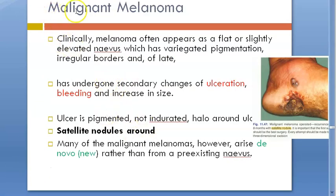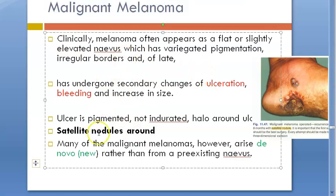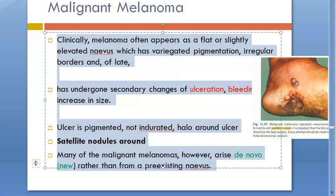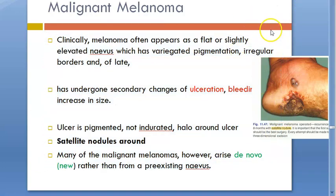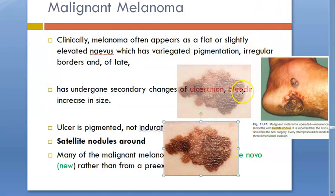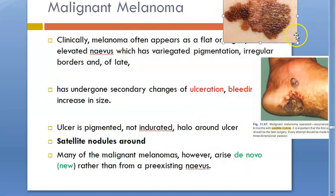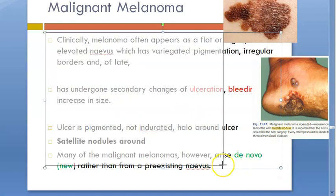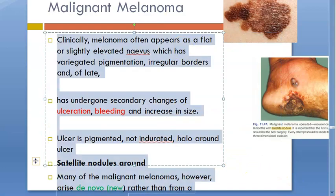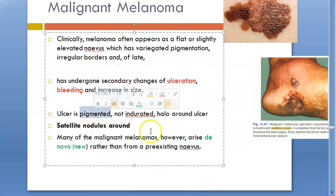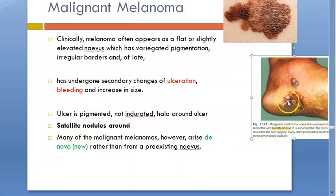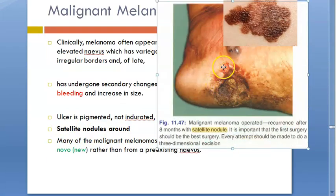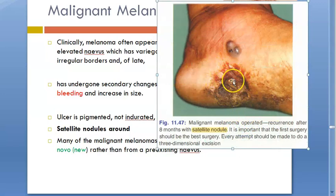Now let us go to malignant melanoma. How will this patient be? They will come with an irregular-shaped nevus with variegated pigmentation and irregular border. Sometimes it can ulcerate, with bleeding and increasing in size. The ulcer will be pigmented, not indurated, and there will be a halo around the ulcer. There can be satellite nodules — shown here, a little away from the actual melanoma.